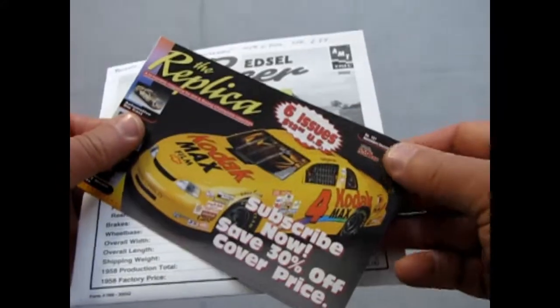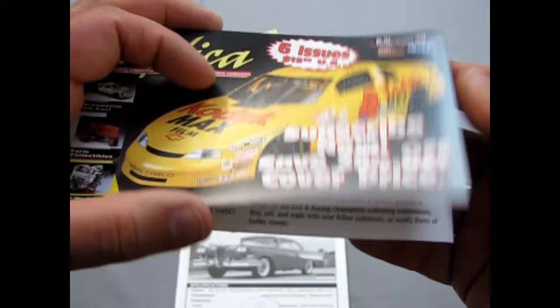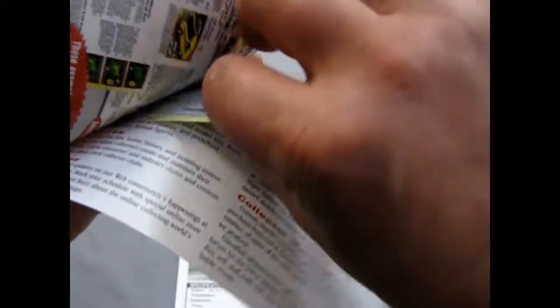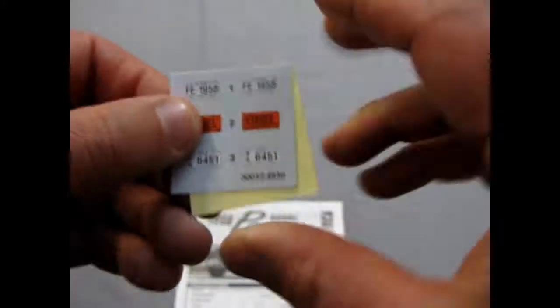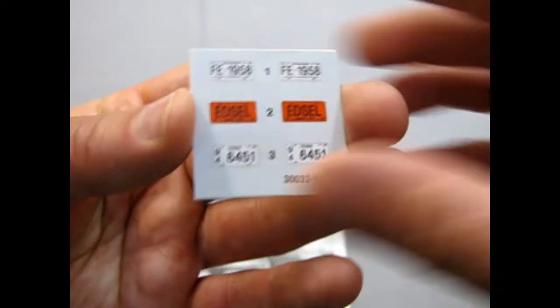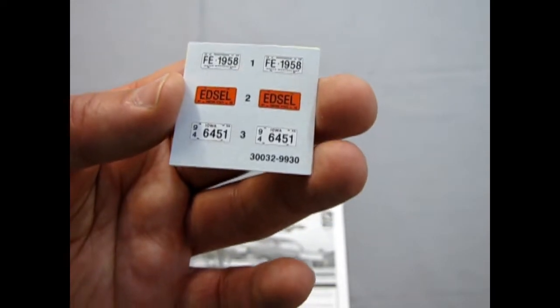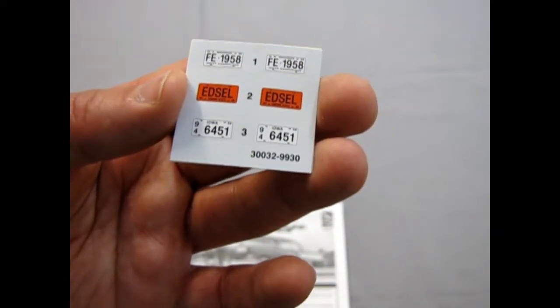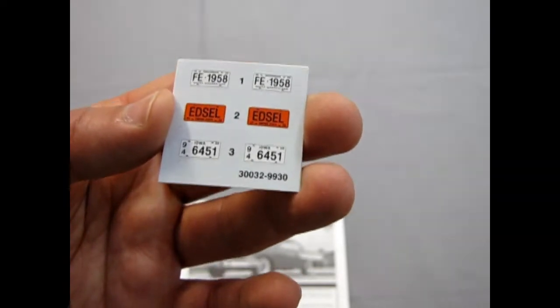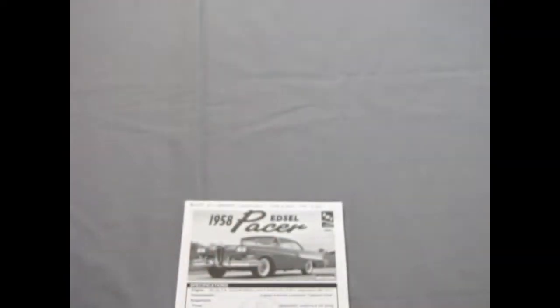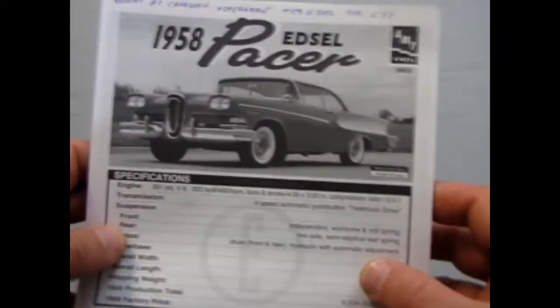It comes with a little flyer for The Replica, which was an AMT Ertl magazine, and inside here are the license plates which says FE 1958 Edsel and Iowa 6451, and the top license plate is from Michigan. I'd like to see some Canadian license plates but anyway.